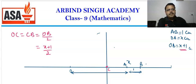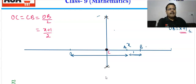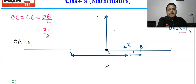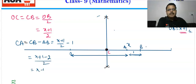Here we have the perpendicular bisector as an arc, and here it intersects. Now we calculate CA. CA equals CB minus AB. CB is (x+1)/2, and AB is 1. So CA = (x+1)/2 − 1 = (x+1−2)/2 = (x−1)/2.